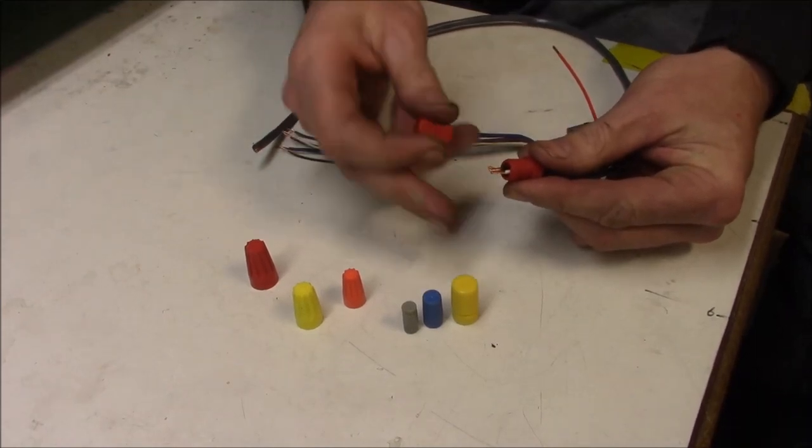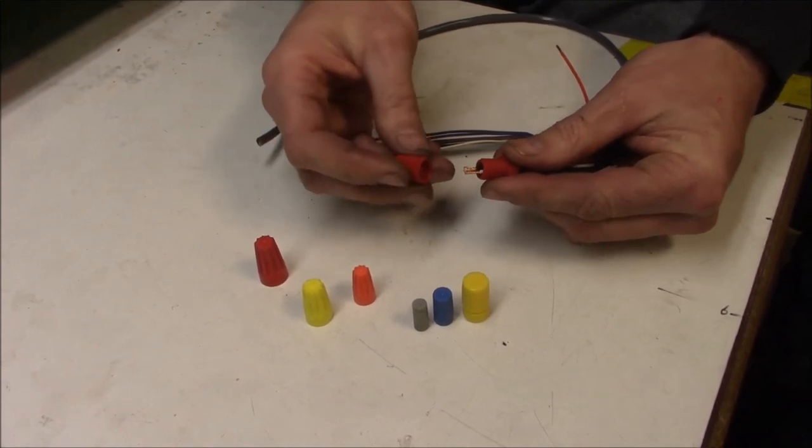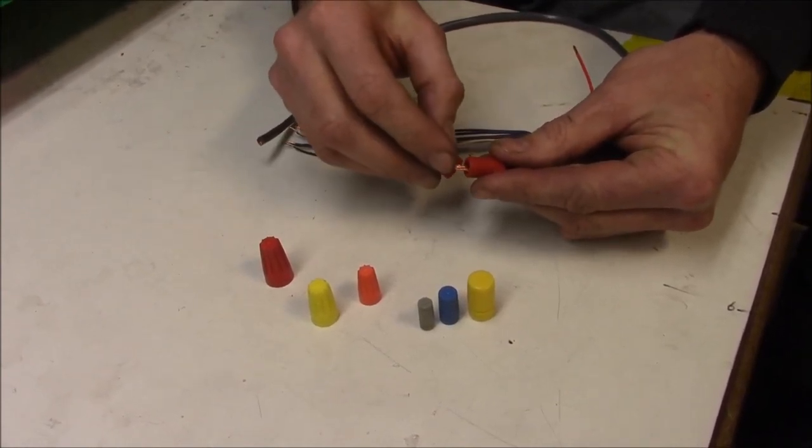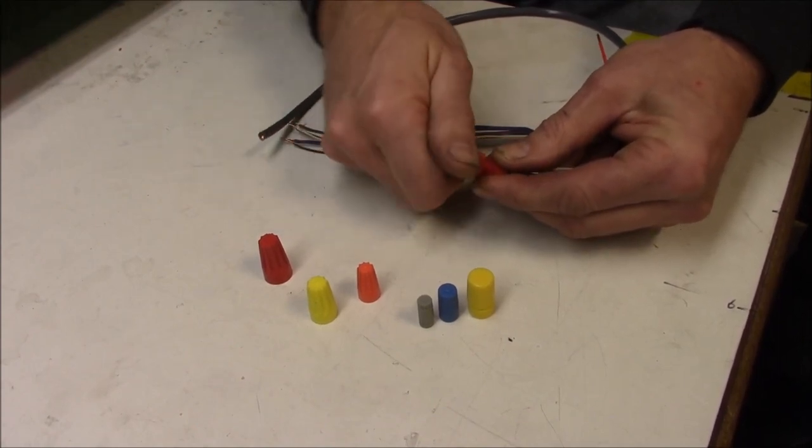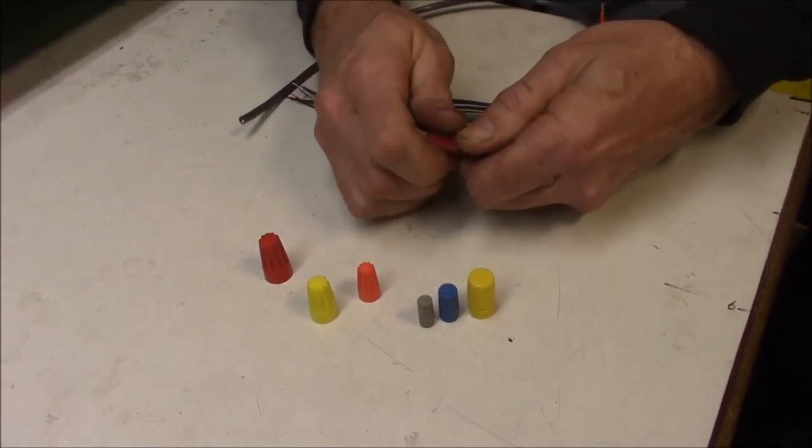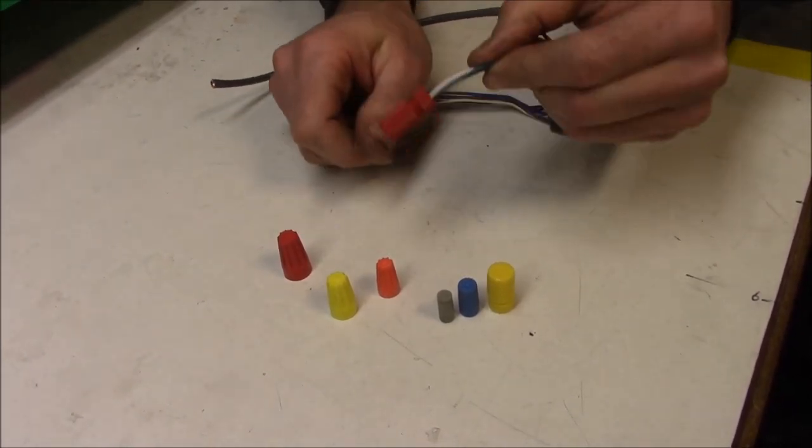And there are different sizes, so if you had a smaller wire, you wouldn't use the bigger connector, but it's easier to show you in the video. You make sure a little bit is hanging out, and then you just simply screw this end on. And that's pretty solid.